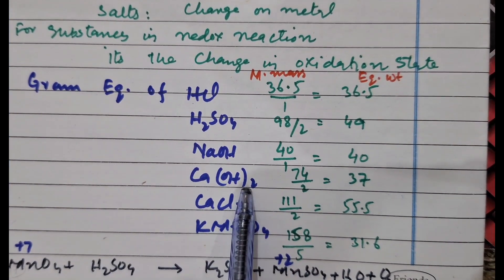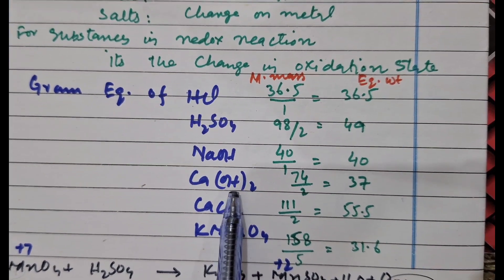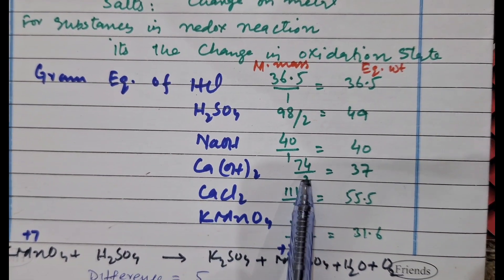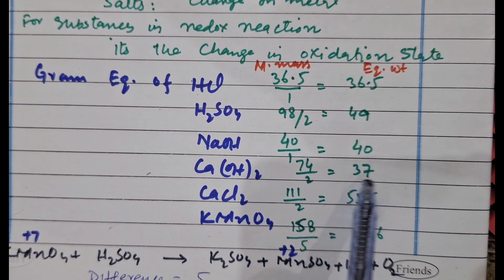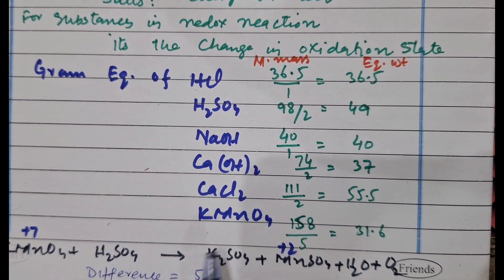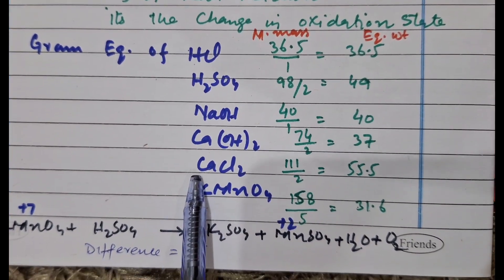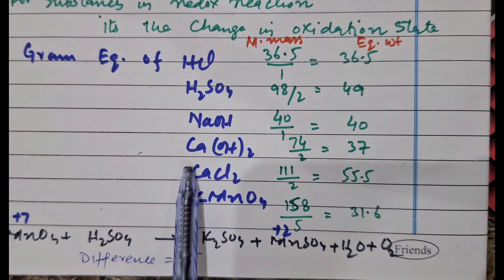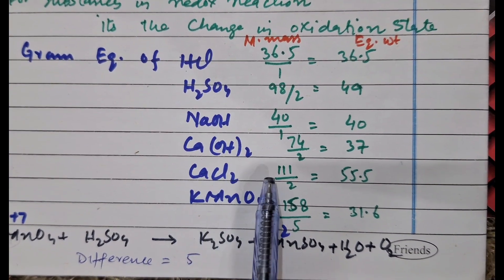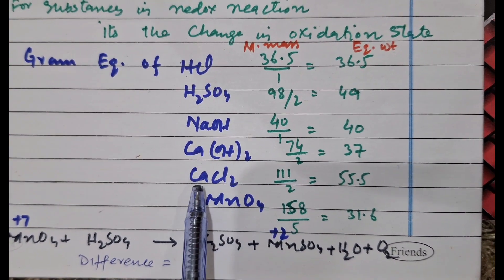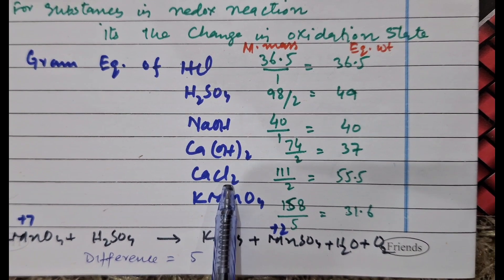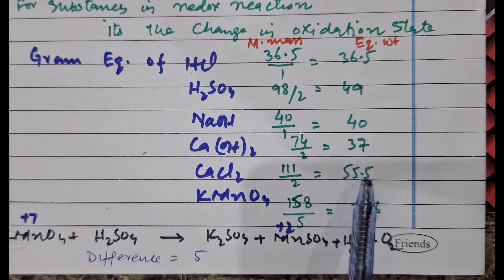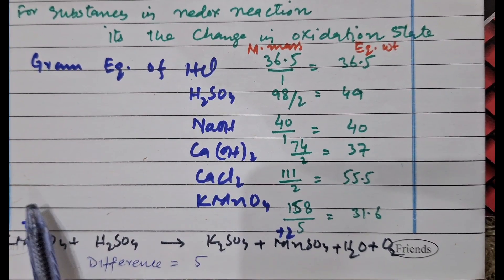For calcium hydroxide, there are two replaceable OH⁻ ions, so 74 (the molar mass) divided by 2 gives its gram equivalent. For calcium chloride, which is a salt, it is the charge on the metal ion: 111 is the formula weight of calcium chloride and 2 is the charge on calcium, so 55.5 comes out to be its gram equivalent.